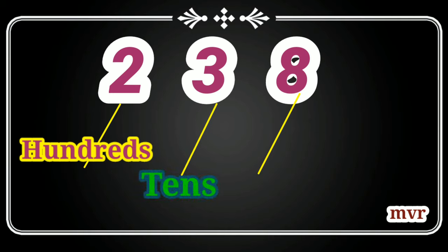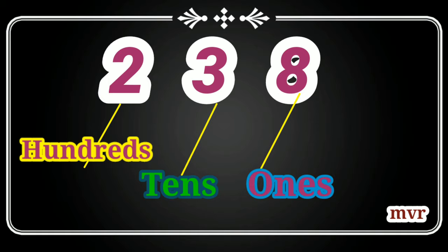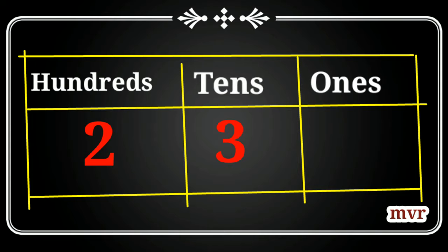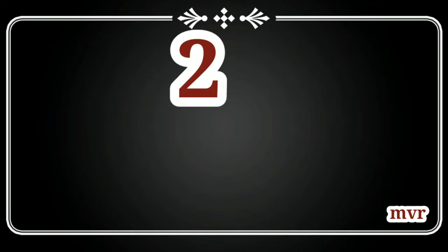For example, 238. It has two hundreds, three tens, and eight ones. So we can easily find the place value. The place value of two is two hundred, the place value of three is thirty, and the place value of eight is eight.